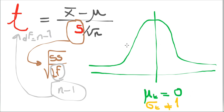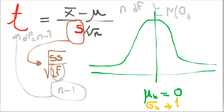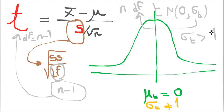As n changes, the degrees of freedom change, and T itself changes. While T remains normal and remains centered at zero, its sigma of T is going to change according to the degrees of freedom. The sigma of T is by nature greater than one — and I compare it to one because the sigma of Z is equal to one. So sigma of T is greater than one.